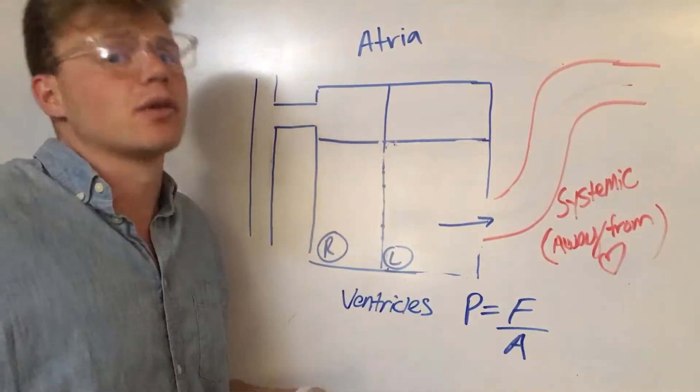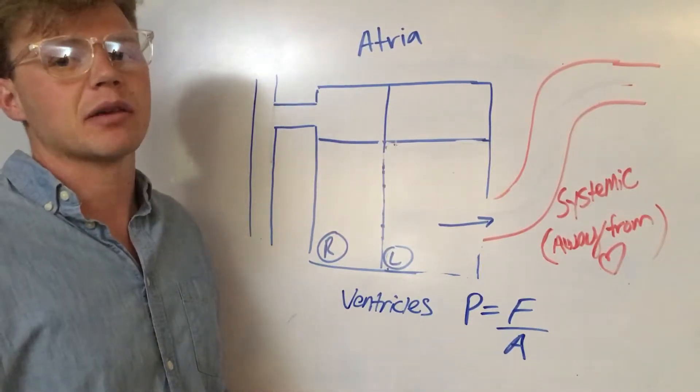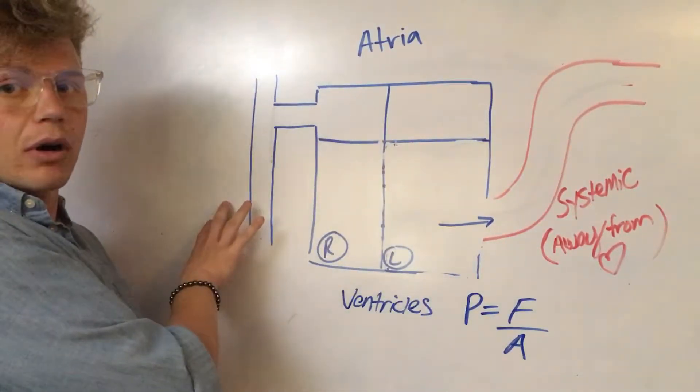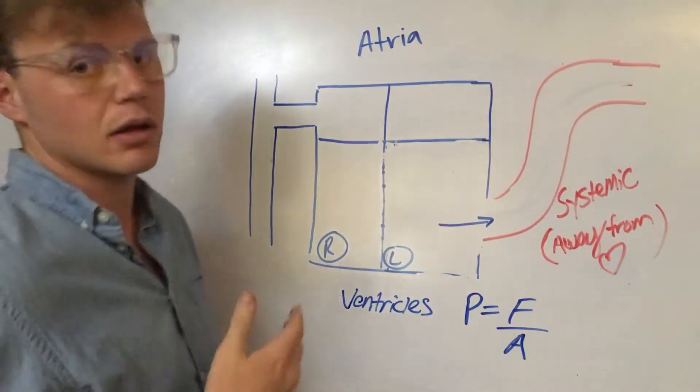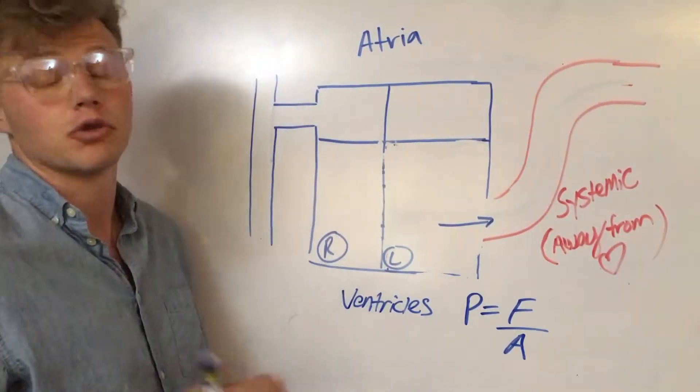And it's because it has to pump against a way higher systemic pressure compared to the right side of your heart, which is more of your venous pressure, which is a much lower pressure gradient.